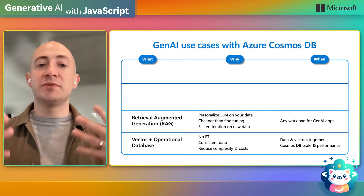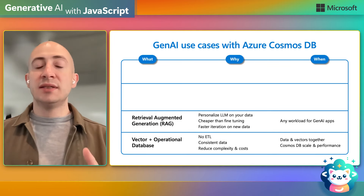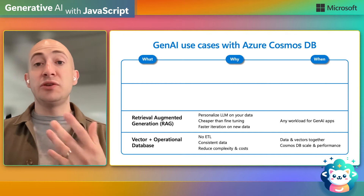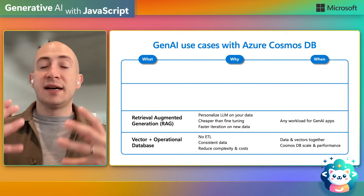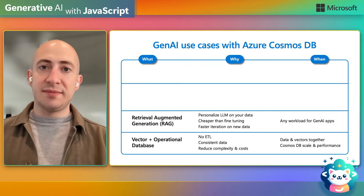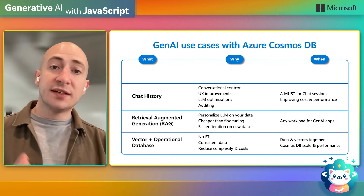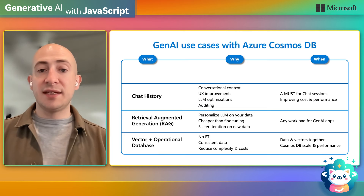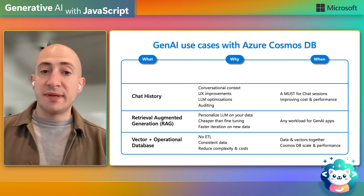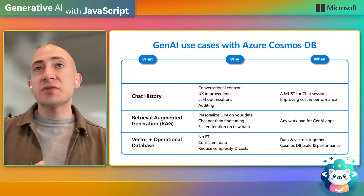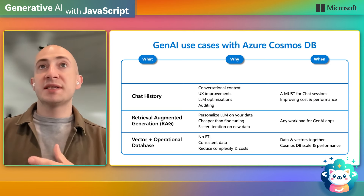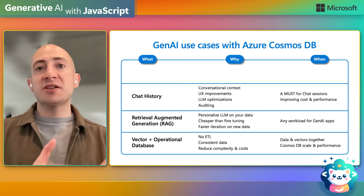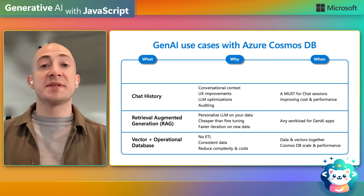Built on top of that is retrieval augmented generation — bringing your own data to a large language model so you can personalize it for your scenario. You can do this today with very high speed and efficiency using Azure Cosmos DB. Chat history, as mentioned with OpenAI, is really good for conversational context, but also for analyzing where your AI application performs well or where it needs improvement, so you can use it for auditing or improvement purposes.